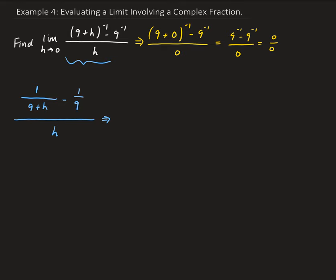What we want to do is look in the numerator and combine these using a common denominator. So we can multiply this side by nine over nine, and then this side we're going to multiply by nine plus h over nine plus h. So now we have the common denominator of nine times nine plus h, and we can combine these — this gives us nine minus nine plus h, all over nine times nine plus h — and all this is divided by h.